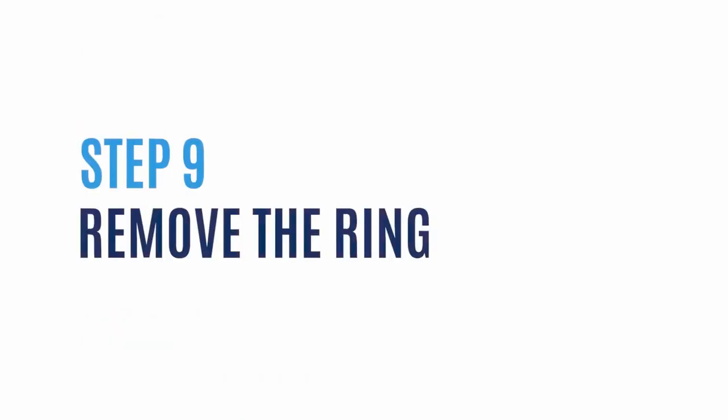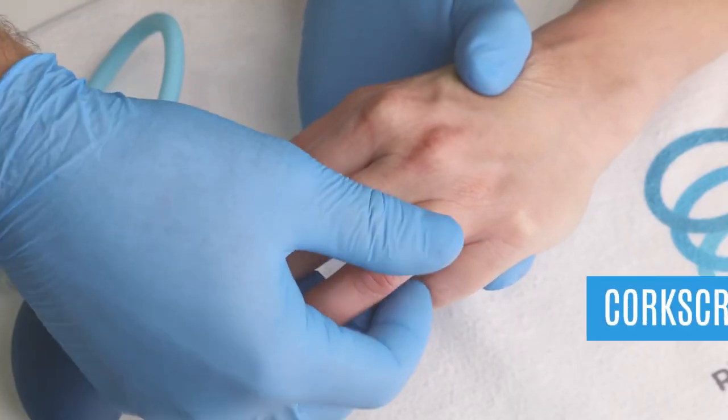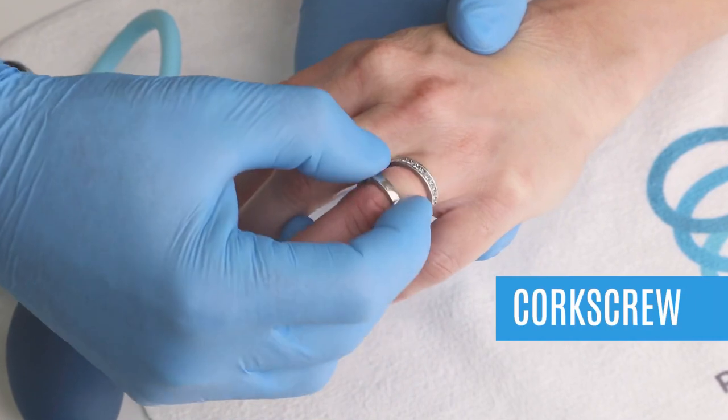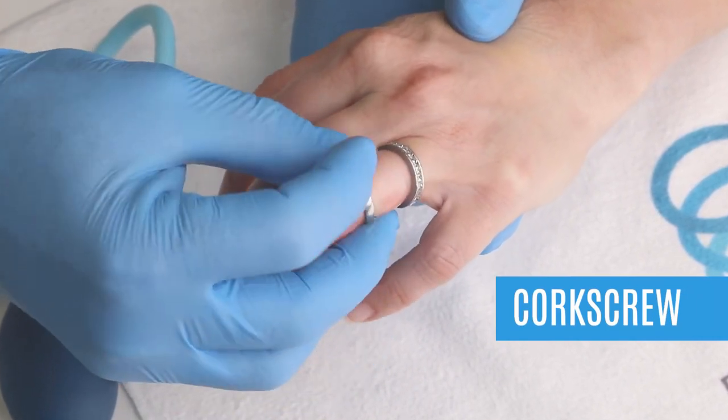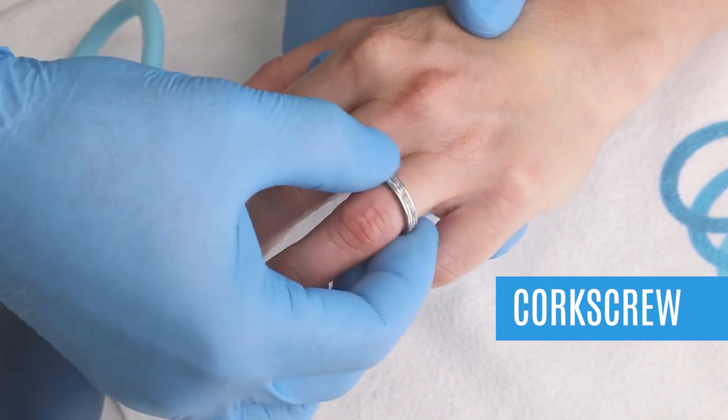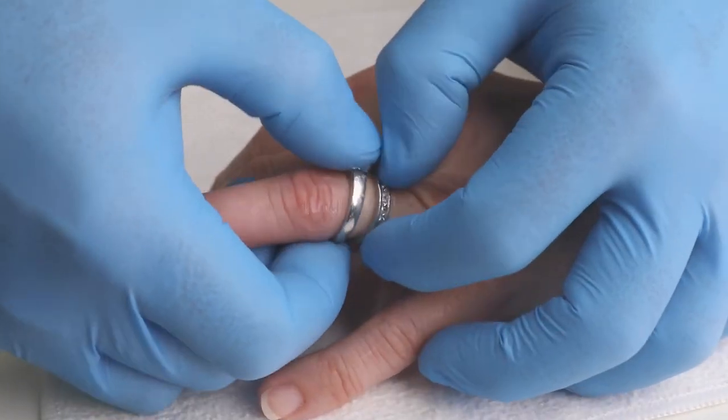Step 9: Now it's time to effectively remove the ring. One of our most successful techniques is the corkscrew motion. Now is the time for you to start that rotational motion in an attempt to rotate the ring off the finger. Do not rush. Don't worry. You have time. The finger will not immediately start to swell back up.